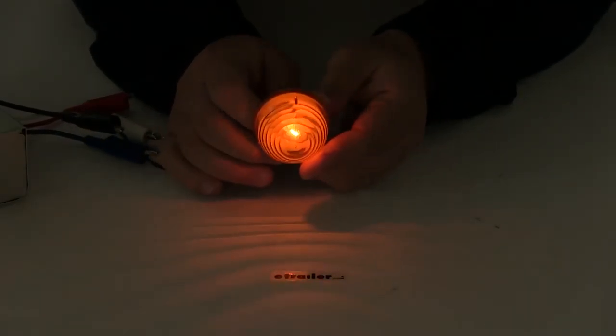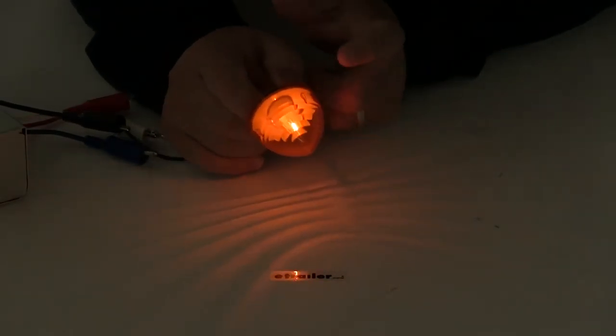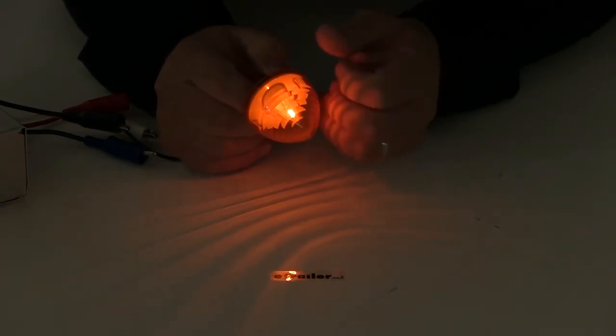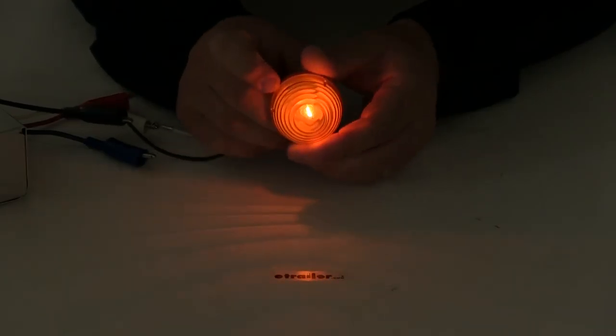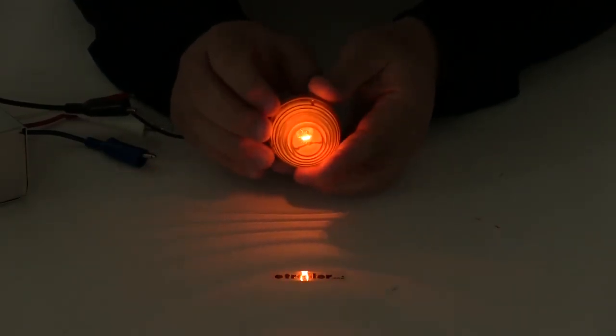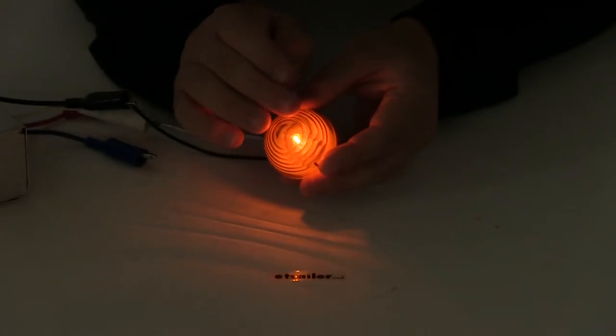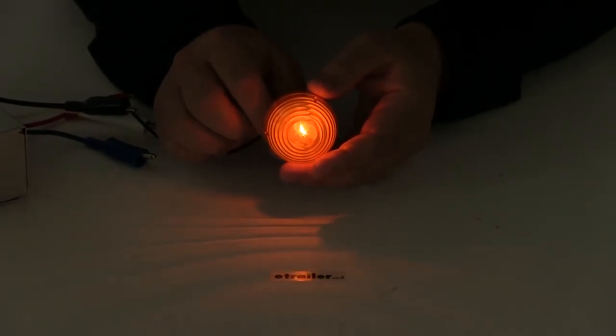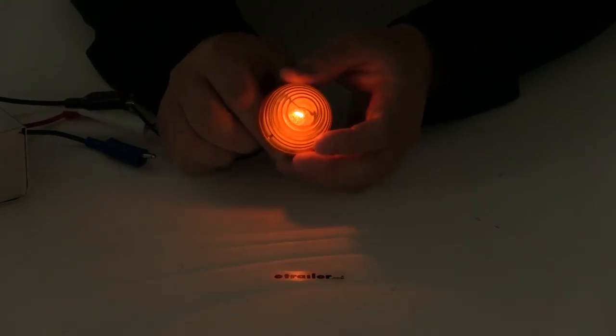You can see here that the light sends out a really nice consistent signal. The design of the lens really does allow a lot of light to come through and be distributed pretty evenly. This is an amber light beehive design and again it functions as a clearance, side marker, or rear tracking light.